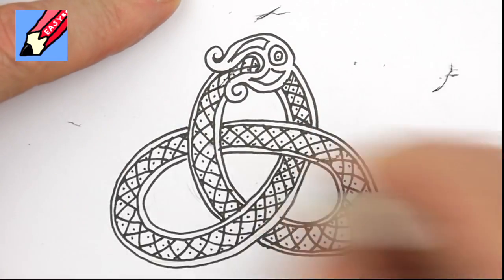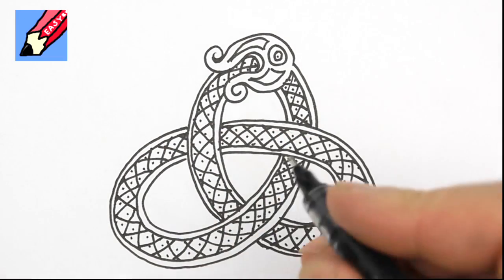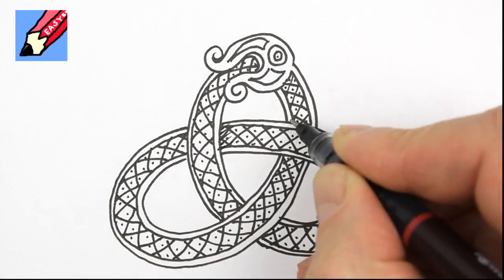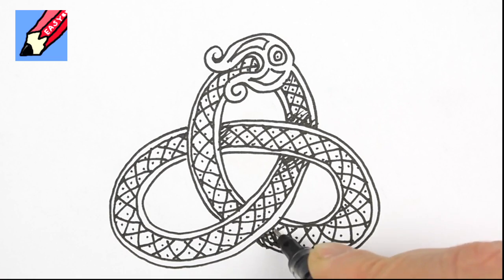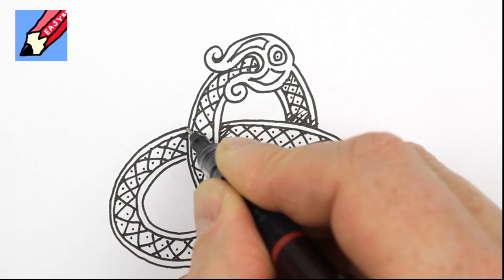Now when you're sure the ink is dry, erase the pencil lines. Finish off with a bit of shading where the snake's body crosses over itself and you'll have a lovely Celtic, Viking, Anglo-Saxon type design.